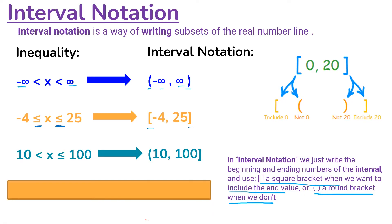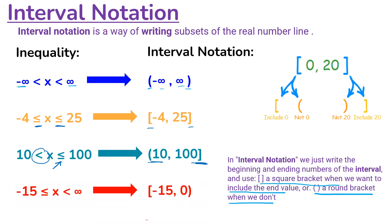Here we have a combination: X is greater than 10 but less than or equal to 100. We use a round bracket because there's no equal-to sign on the left, but a square bracket on the right because we do have that equal-to sign. The last example: X is greater than or equal to negative 15 but less than positive infinity. We include negative 15 with a square bracket, but since infinity is not included, we use a round bracket for positive infinity.